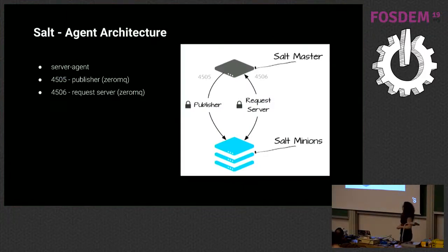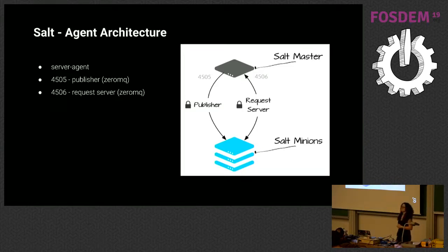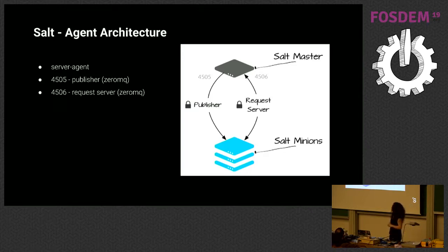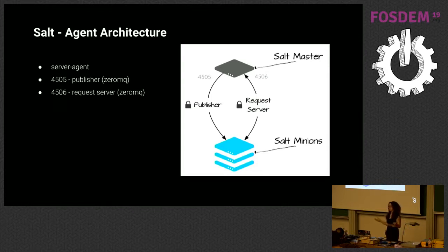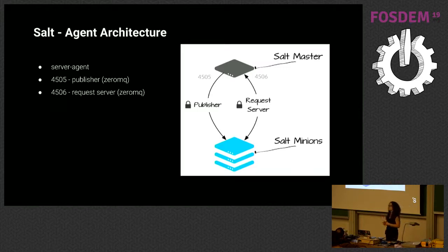Salt is currently set up with a server-agent communication model. We refer to the server as the salt master and the agent as the salt minion. You install the master and then the minion. There are a couple of network services providing the transport layer: the publisher and the request server, both using ZeroMQ's library. The publisher sends commands from the master to the minions, and the request server handles bi-directional communication between the master and minion.